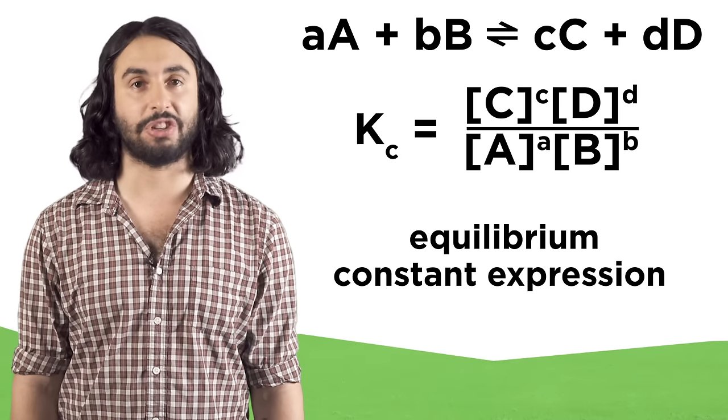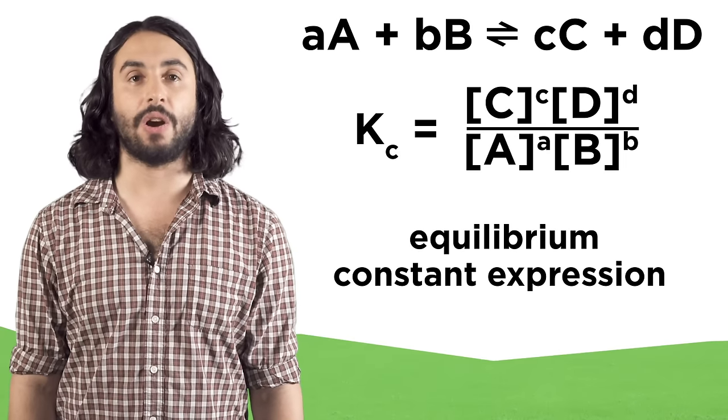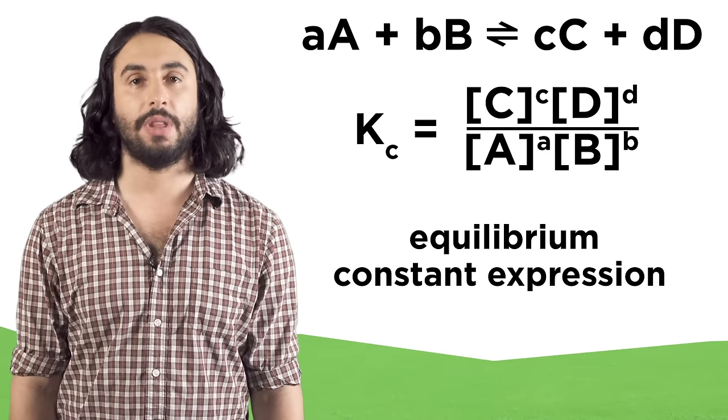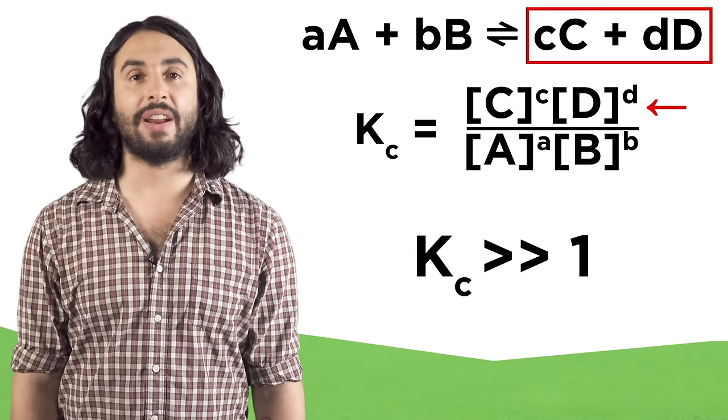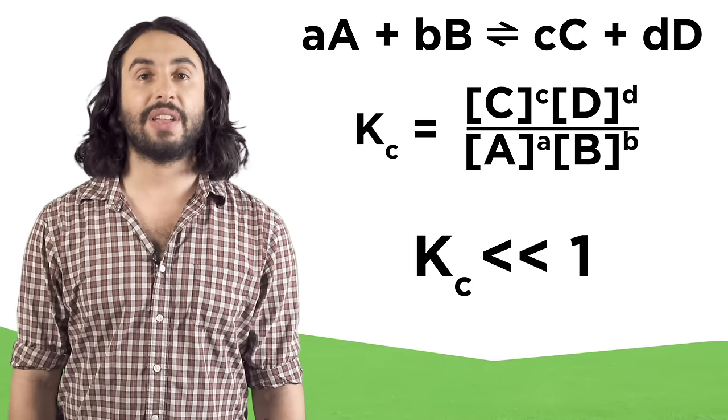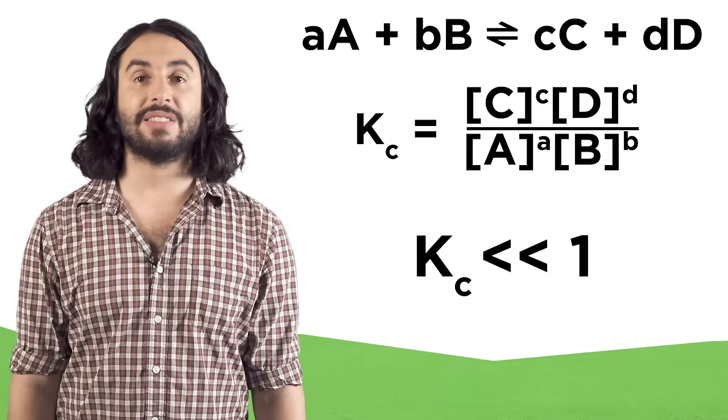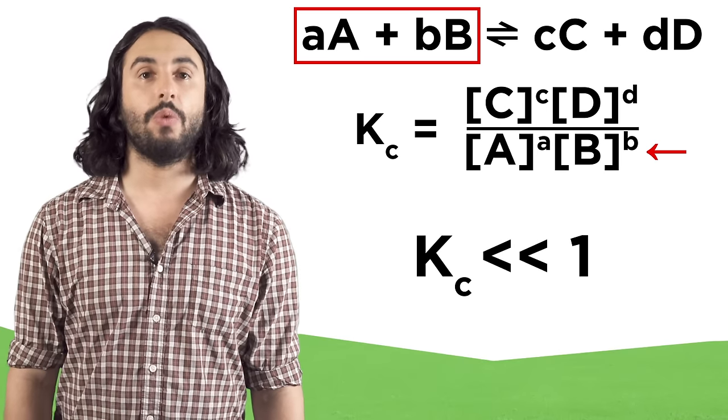One thing this constant tells us is whether the products or reactants are favored in the equilibrium. If Kc is much greater than one, that means the numerator is bigger, so we are creating more products. If Kc is much less than one, that means the denominator is bigger and we are creating more reactants.